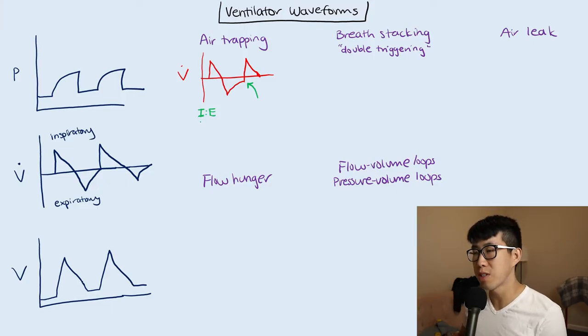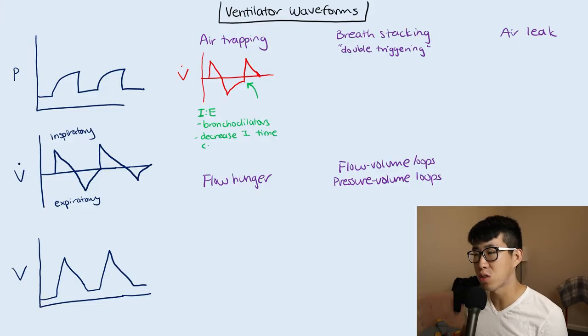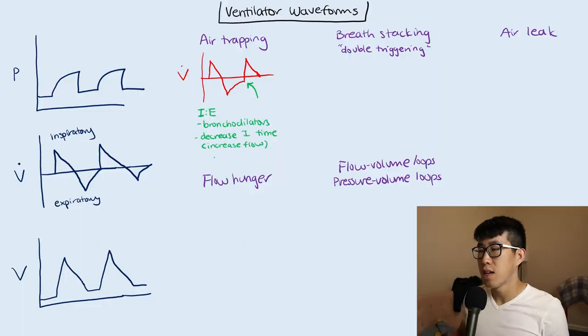First, try some bronchodilators and then decrease the I time. You can either do this directly if you're in pressure control, or if you're in volume control, you can increase flow.